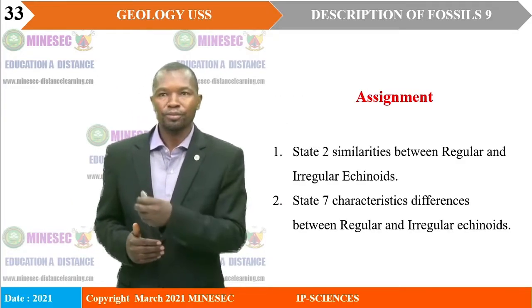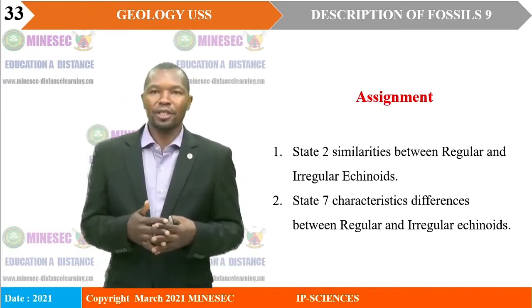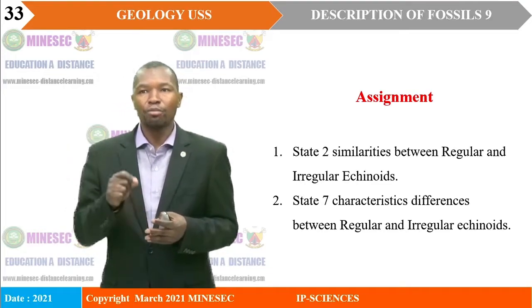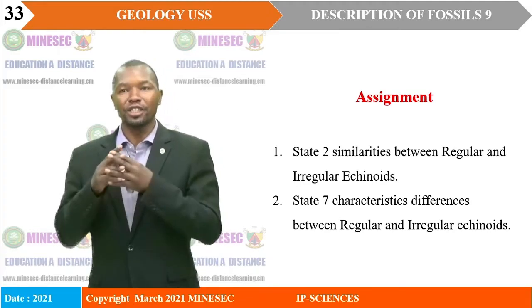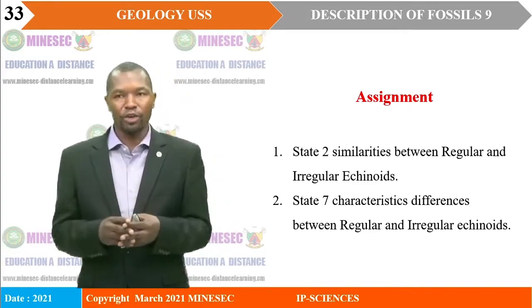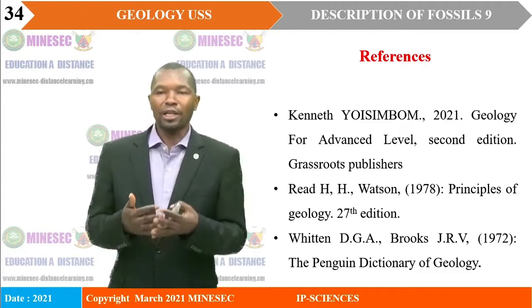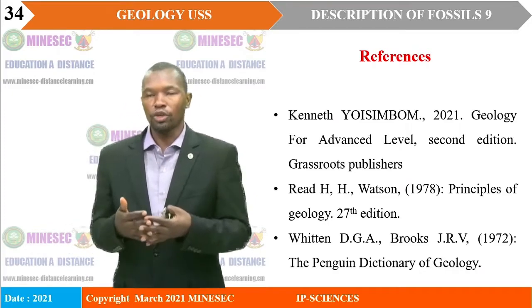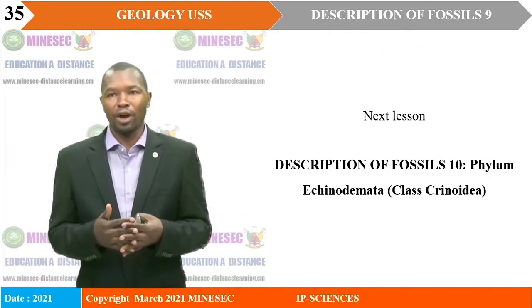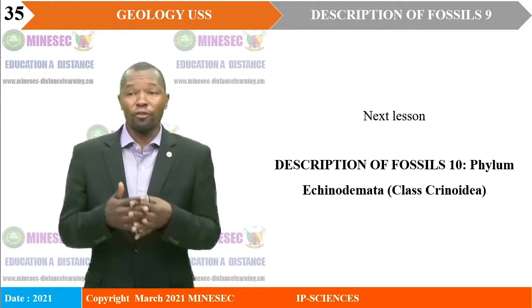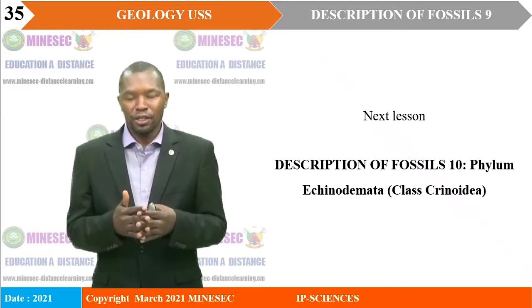We shall take this assignment and while at home, we will try to develop the answers. Number one: state two similarities between regular and irregular echinoids. Number two: state seven characteristic differences between regular and irregular echinoids. While at home, make an attempt and visit the text for geology advanced level, as well as the fundamentals of geology. We have come to the end of our lesson. Our next lesson will be on Description of Fossils 10, focusing on phylum Echinodermata, class Blastoidea. See you in our next class.